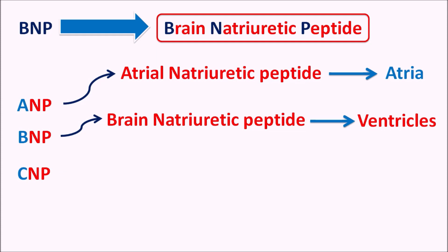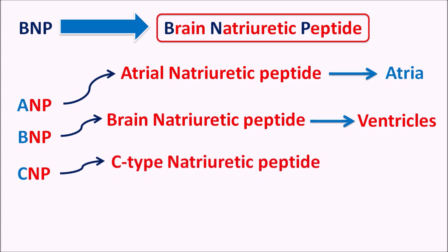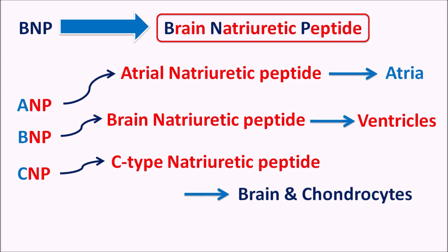The third one is CNP, also called C-type natriuretic peptide. This peptide is released from the brain as well as chondrocytes, and is responsible for longitudinal growth of bones. It is also released from the endothelium. In this way, three natriuretic peptides are present within the body, and all these peptides are mainly responsible for natriuresis and increased excretion of sodium along with vasodilation.